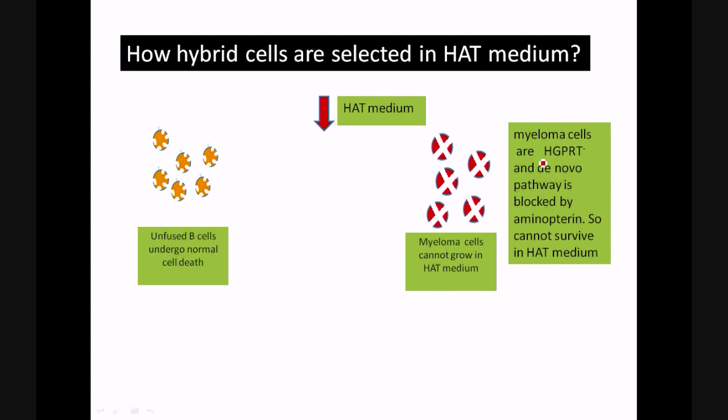In the case of myeloma cells, myeloma cells are HGPRT deficient. We are actually making it HGPRT deficient. The de novo pathway is blocked by aminopterin, so in order to survive, the salvage pathway should work. But this particular enzyme is lacking, so it won't work. So in HAT medium, myeloma cells cannot grow.